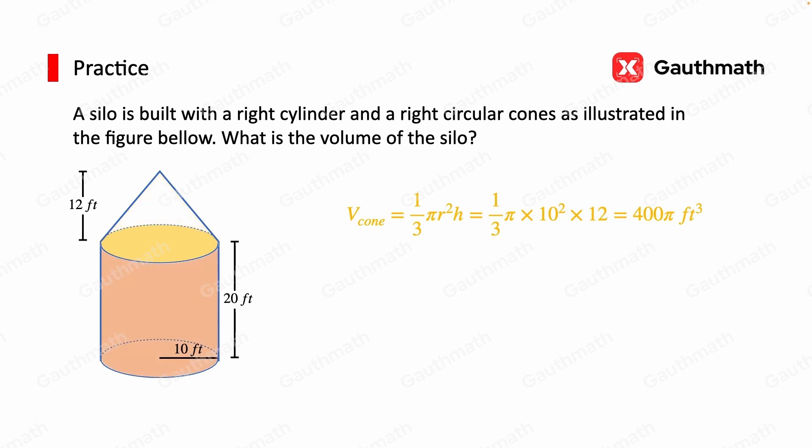And then, we can find the volume of the cylinder using pi R squared times H, which is pi times 10 squared, the radius, times 20, the height, which equals 2,000 pi cubic feet.